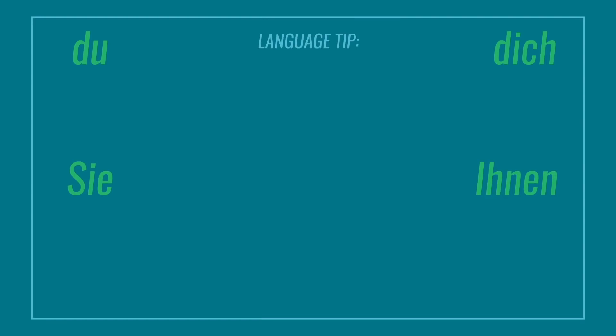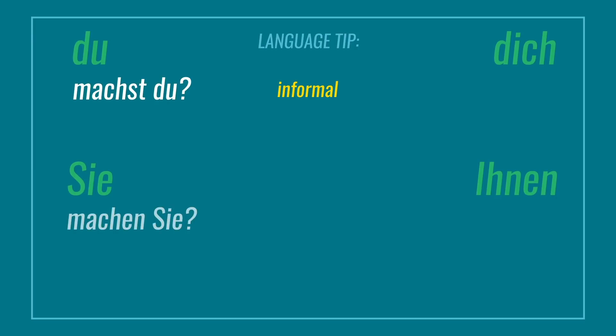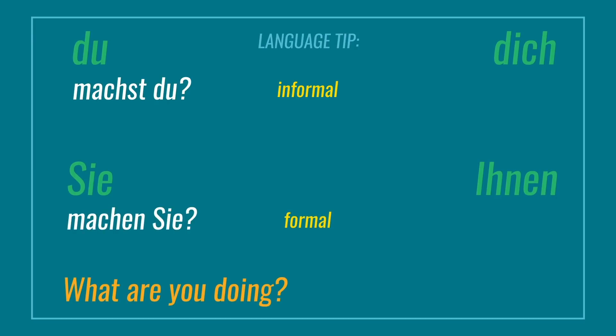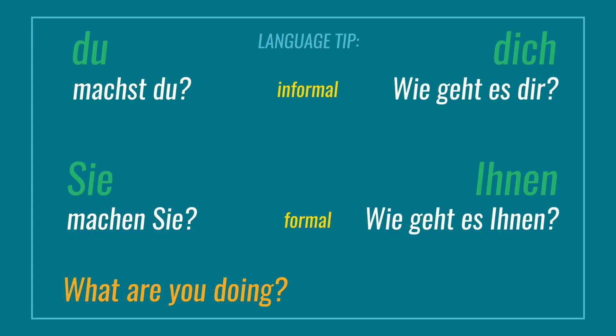There are two common phrases using du and sie, and dich and ihnen respectively. The first is Was machst du? informally or Was machen sie? formally, both meaning 'What are you doing?' The other phrase is Wie geht es dir? informally and Wie geht es ihnen? formally, both meaning 'How are you?' Do you have any more questions? Leave them in the comments and I'll try to answer them. Tschüss, bis zum nächsten Mal — Bye, see you next time.